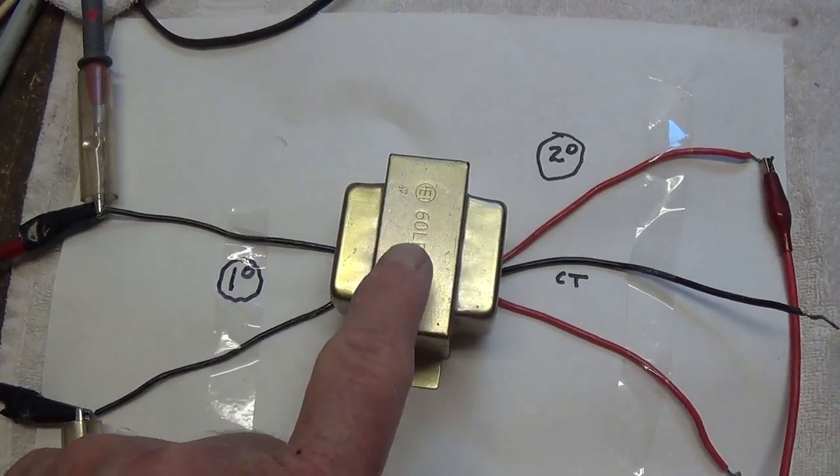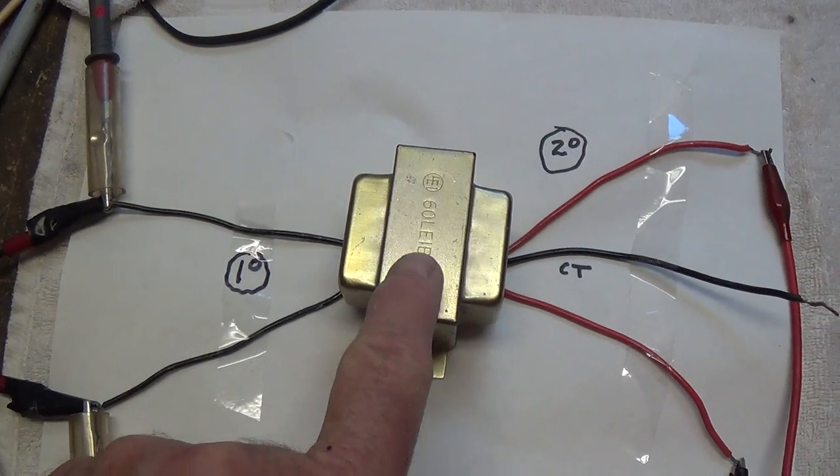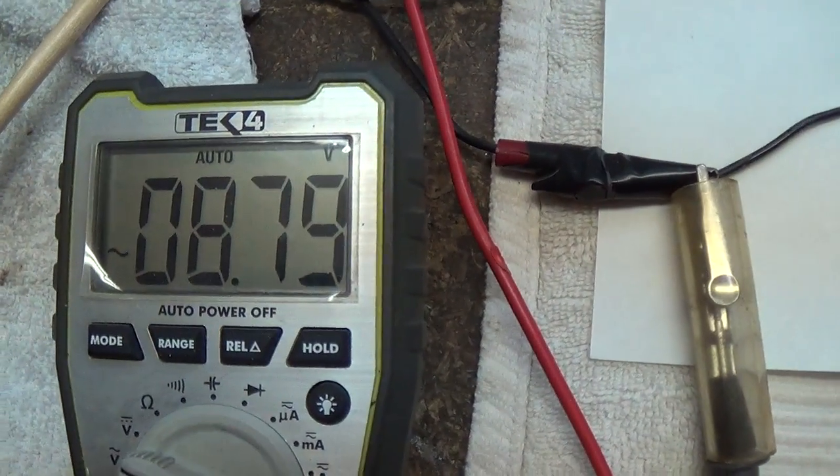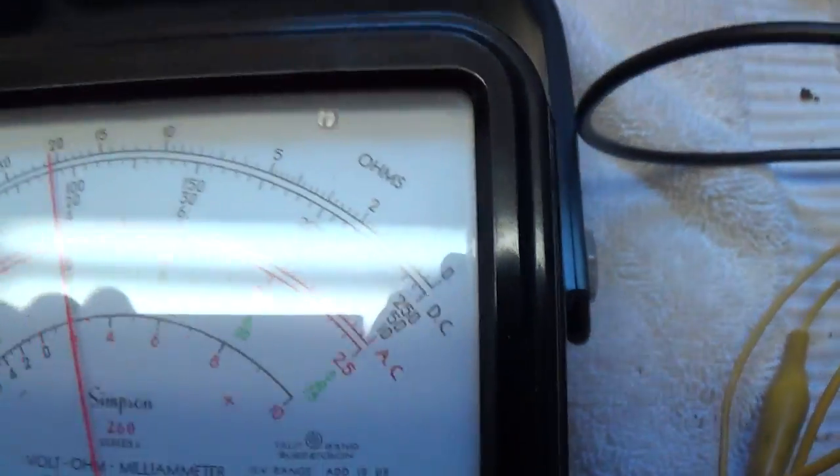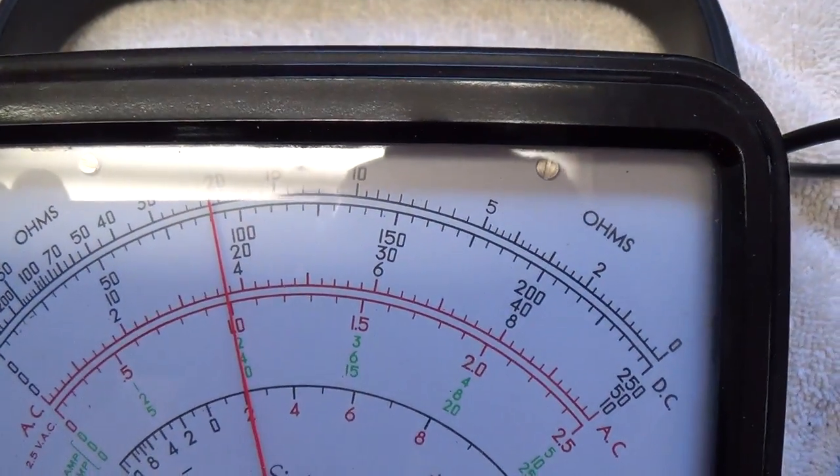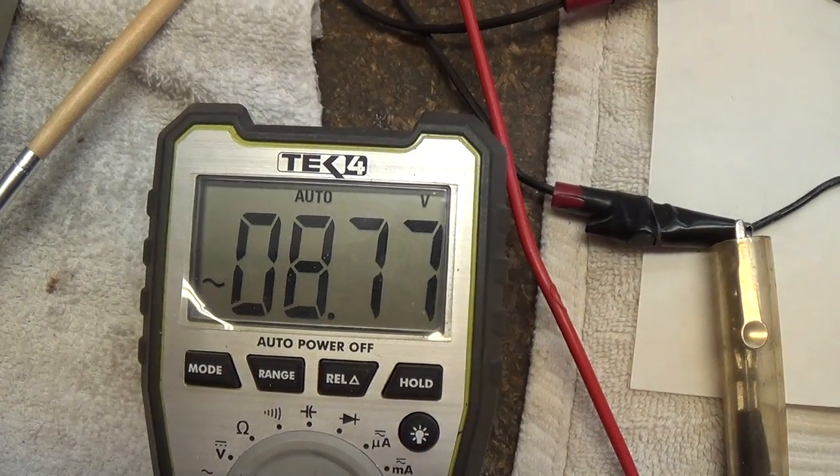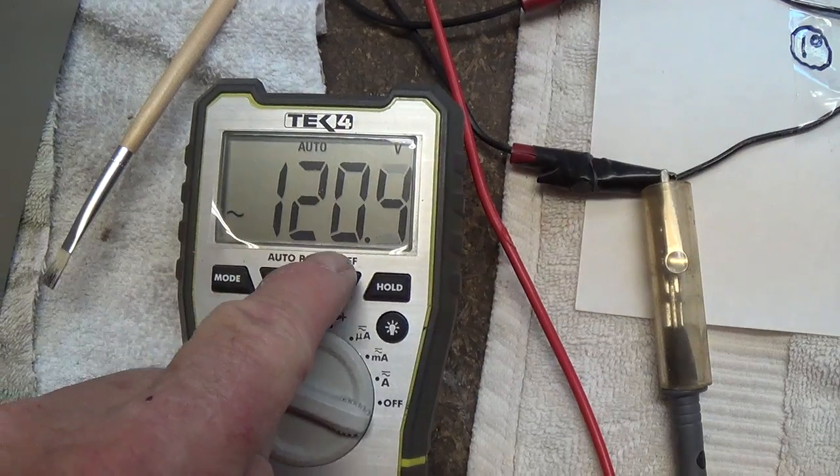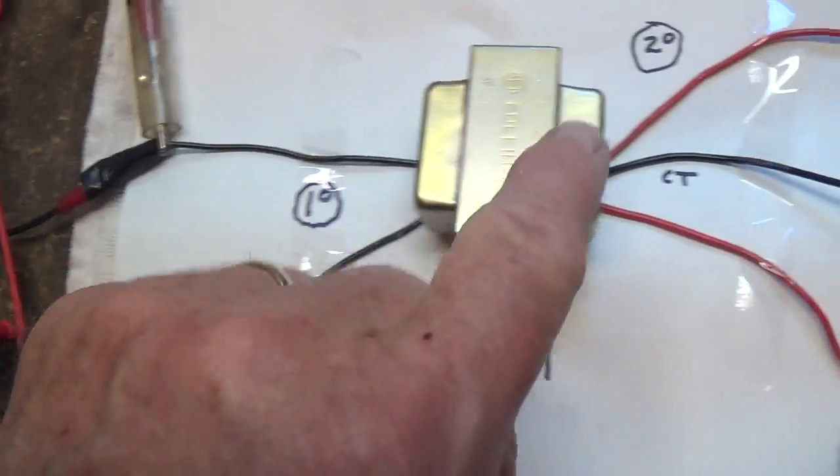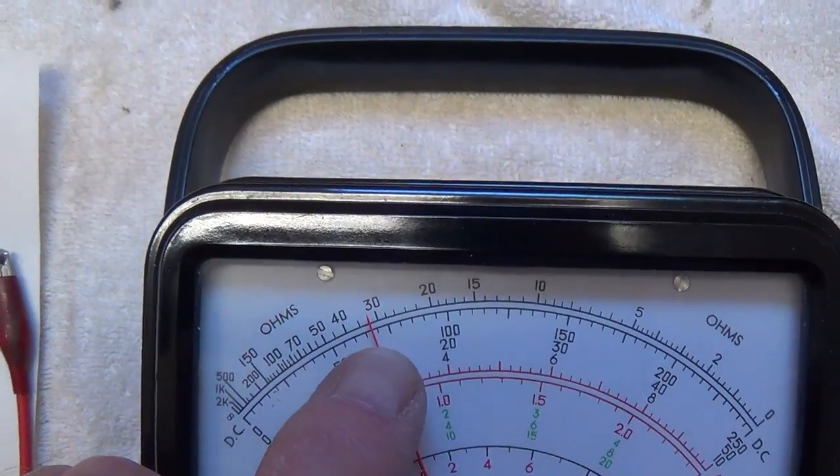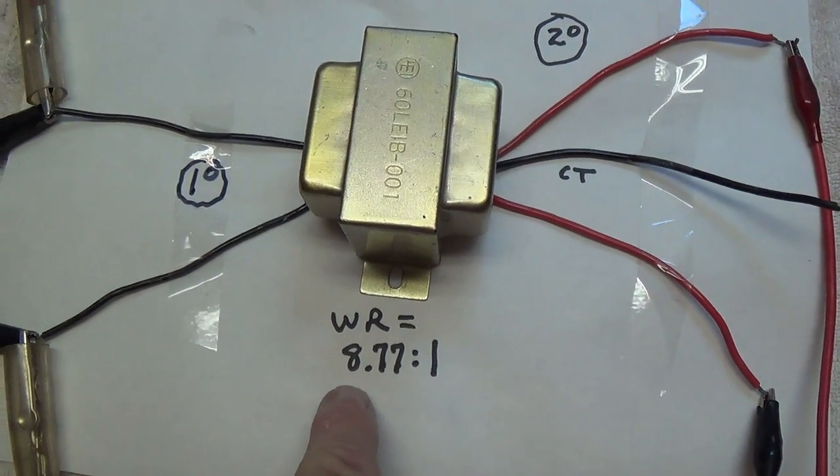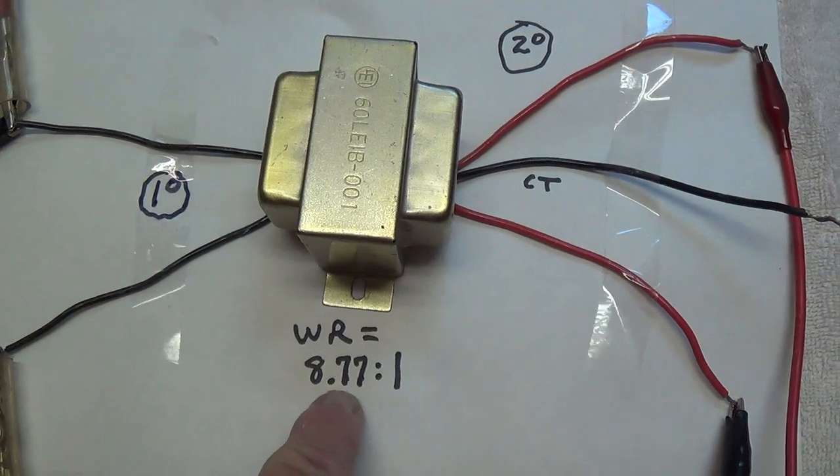For our experiments I'm going to use this new filament transformer right here. Step one, let's figure out its winding ratio. By using the Variac we're going to apply 8.79 volts of AC RMS into the transformer to get exactly 1 volt out of the secondary. Therefore our winding ratio is about 8.77 to 1. And to double check if I crank the Variac up to apply 120 volts of RMS AC to the primary, which will reiterate our finding that the winding ratio is indeed about 8.77 to 1.